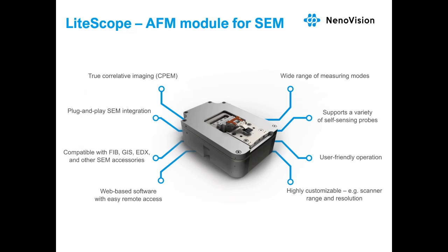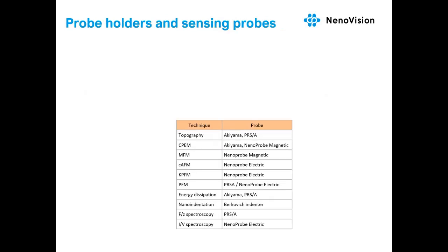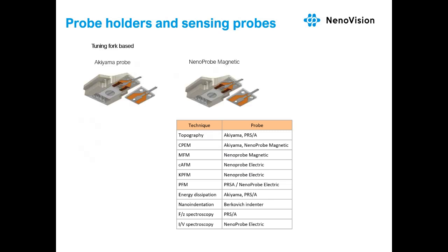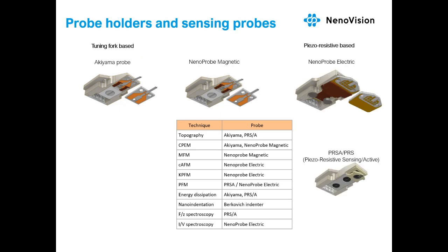There are several measuring modes which can be used. We use tuning-fork-based probes such as the Akiyama probe or NanoProbe Magnetic for magnetic measurements. We use piezoresistive-based probes for electrical measurements and mechanical properties.